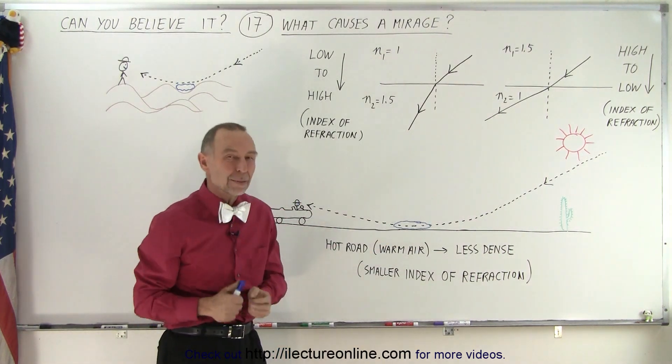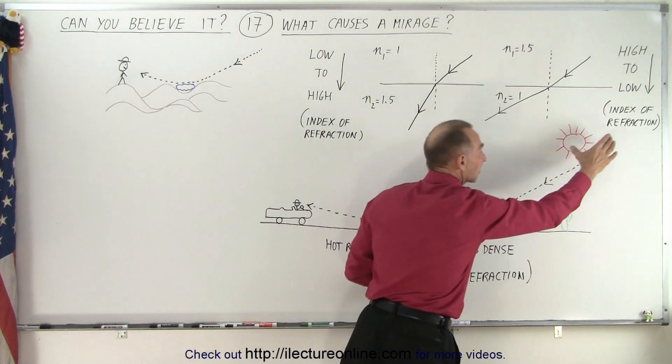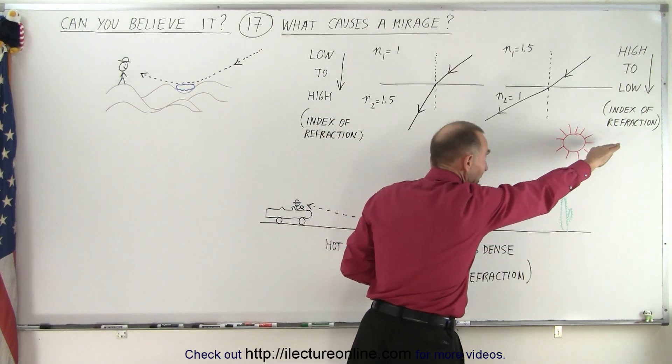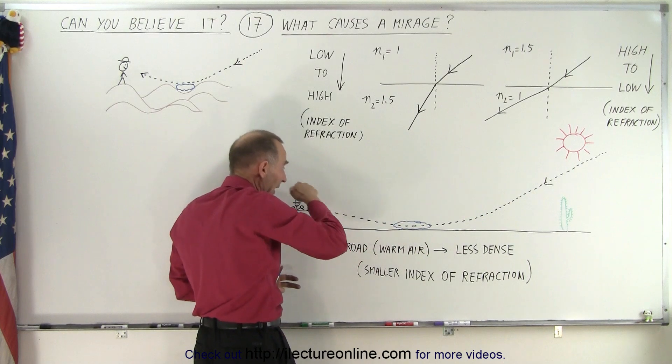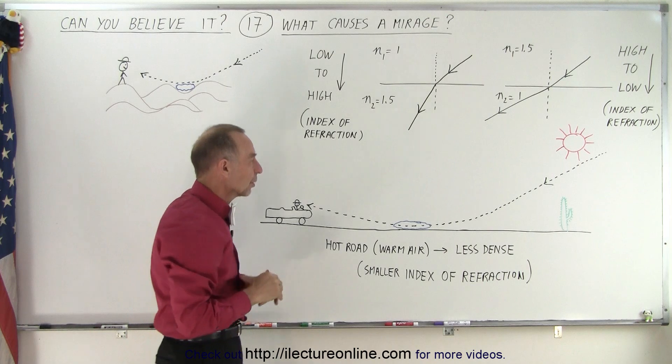So essentially, this is exactly the same as a mirage. What we're seeing is actually the sky kind of being reflected off the road. Well, it's actually the light coming from the sky just simply bending. And so we're looking down here, seeing the sky that looks like water shimmering over the road.